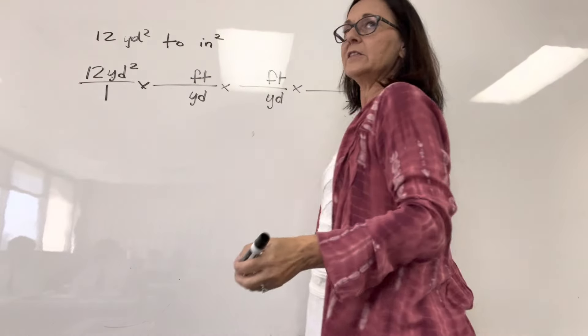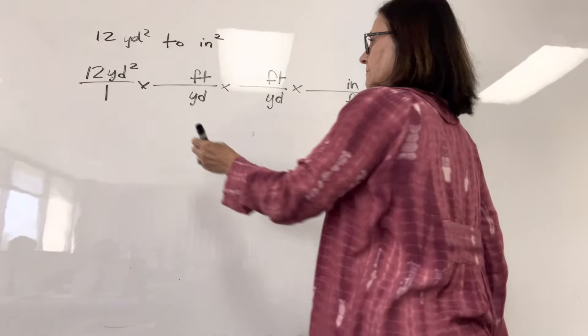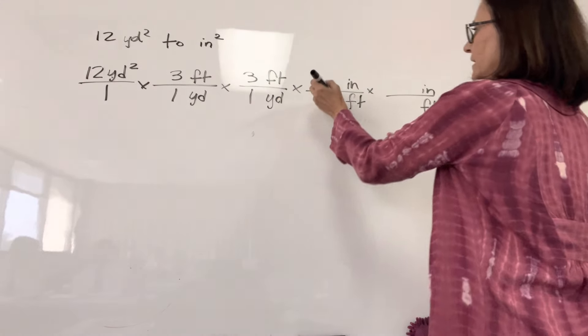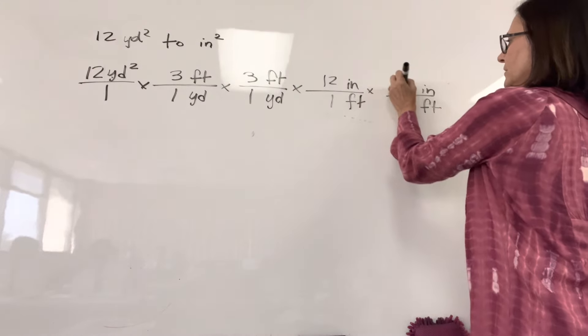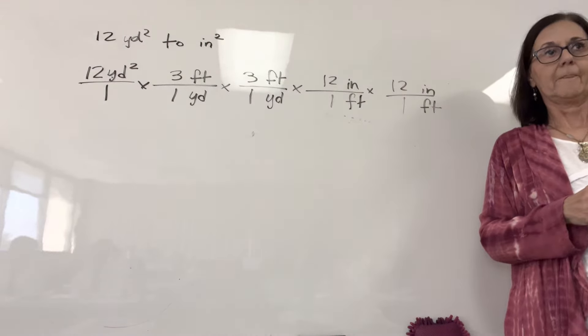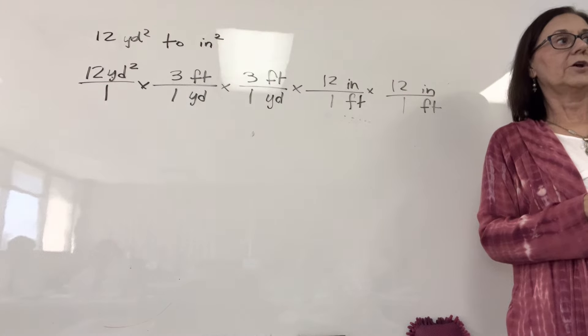All right. So how many, what's the unit conversion for feet and yards? Three to one. And this is 12 to one. We actually could have said there's 36 inches in a yard.